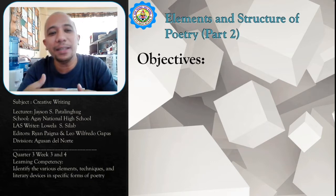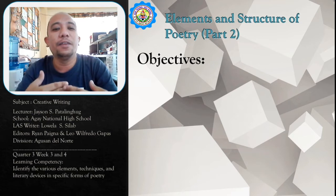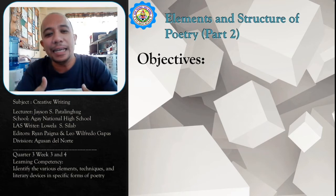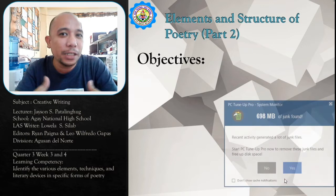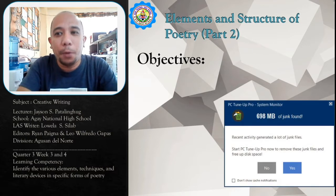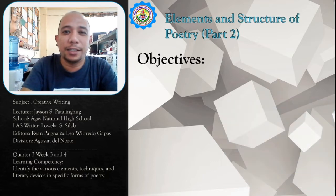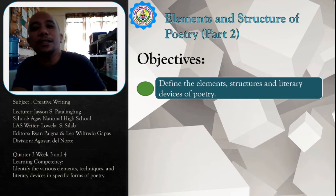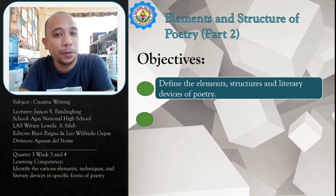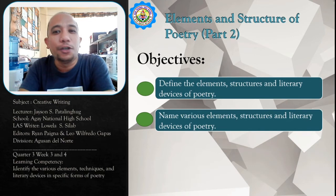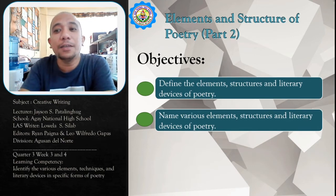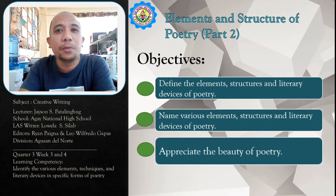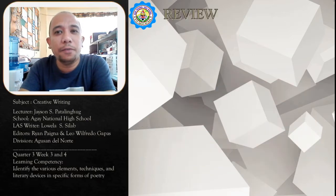Our learning competency is to identify the various elements, techniques, and literary devices in specific forms of poetry. Our specific objectives are: number one, define the elements, structures, and literary devices of poetry; number two, name various elements, structures, and literary devices of poetry; and number three, to appreciate the beauty of poetry.